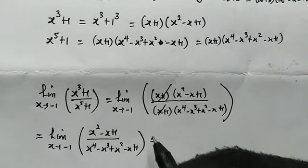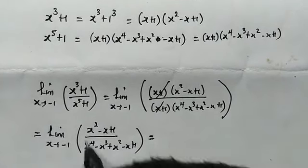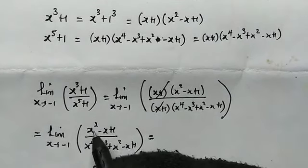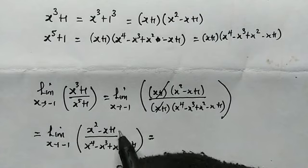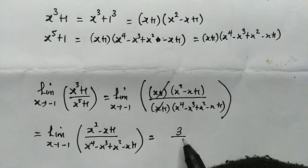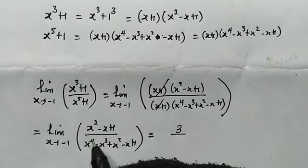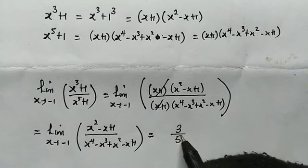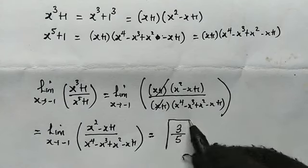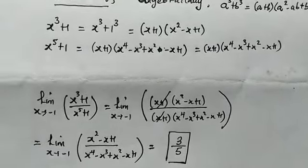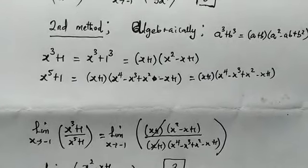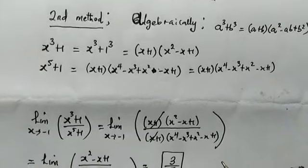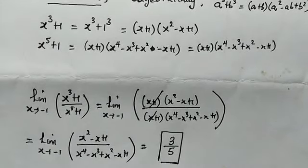We are free to substitute x equals negative 1. In the numerator: negative 1 squared is 1, minus negative 1 is 2, plus 1 gives us 3. In the denominator: 1 minus negative 1 is 2, plus 1 is 3, minus negative 1 is 4, plus 1 gives us 5. So we get 3 over 5 once again. Thank you for watching — please subscribe to my channel, and like, comment, and share. Bye-bye!